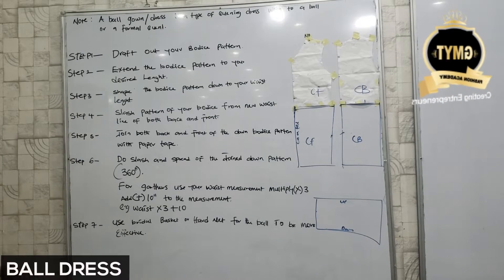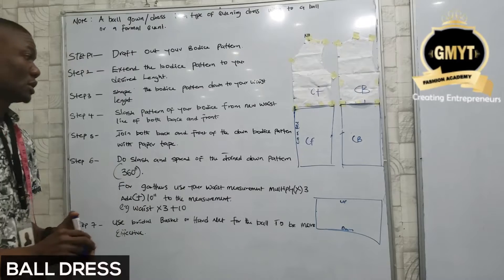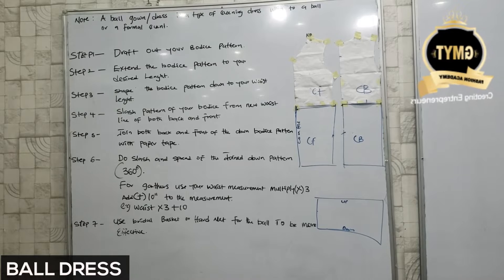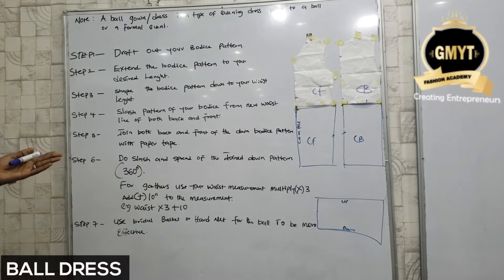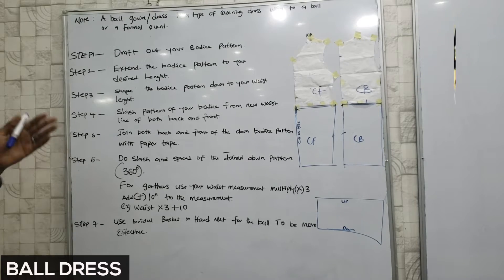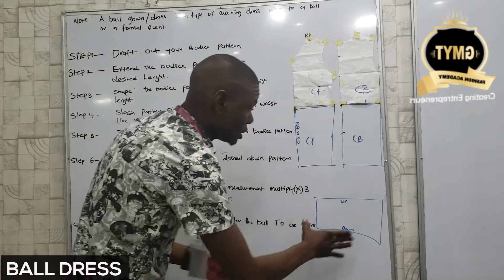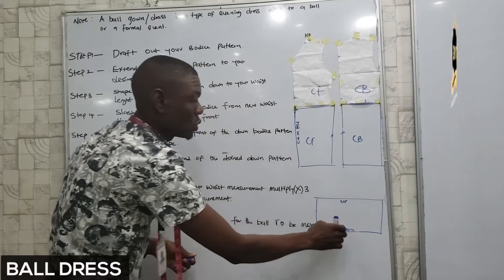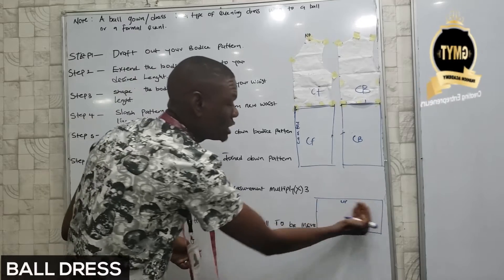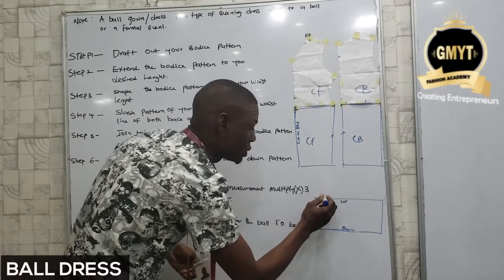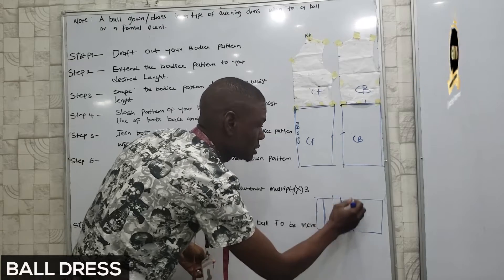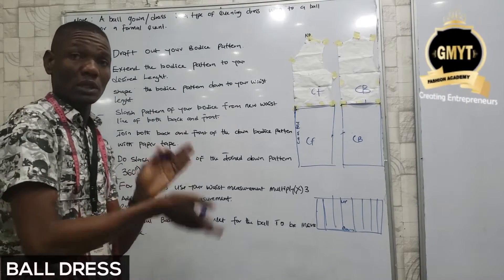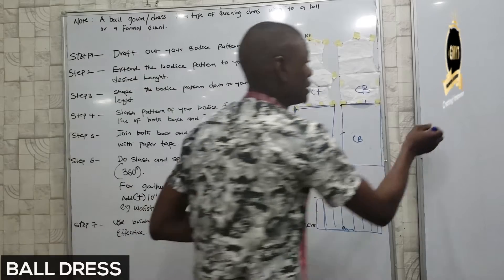Are we together? Before moving forward, let me see if you have any questions so we can move to our next stage. Now do slash and spread of the joined down pattern — 360 degrees. Don't forget, after joining your down part pattern you are getting one piece, where this part is a cut on fold. Now fold this paper as much as you can so you can get the lines. There is no particular measurement for this — the whole idea is to make sure after folding, you slash and spread to get a 360-degree circular form.